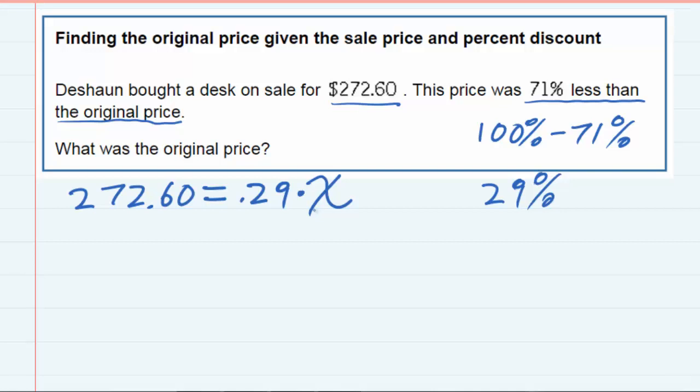I don't know what the original price is so I'm going to call it X. So the $272.60 is 29% of the original price. Again, 29% because it was 71% off. But now I can solve for the original price. I can divide the left-hand side by 0.29 and divide the other side by 0.29.